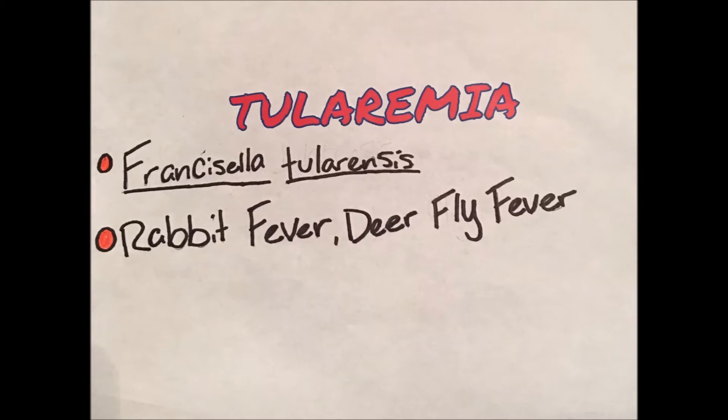Tularemia, also known as rabbit fever or deer fly fever, is an infectious disease caused by the bacterium Franciscella tularensis. It is a rare infectious disease that typically attacks the skin, eyes, lymph nodes, and the lungs. It can affect humans and other mammals, such as rabbits or other small rodents.